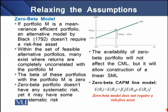Relaxing assumption 2 — the risk-free rate — gives us a zero beta model. If portfolio M is a mean-variance efficient portfolio, this is an alternative model by Black which does not require a risk-free asset. Within the feasible set of portfolios, many exist where returns are completely uncorrelated with the market portfolio, meaning the beta of these portfolios with portfolio M is zero. A zero beta portfolio does not have any systematic risk, though it may have some unsystematic risk. Its availability will not affect the CML but will allow construction of a linear SML.